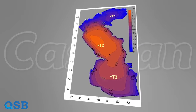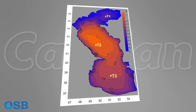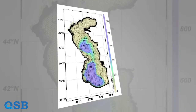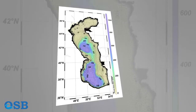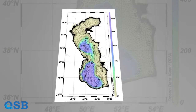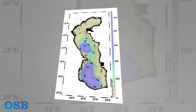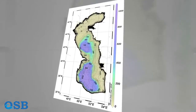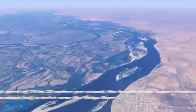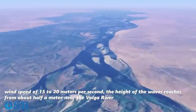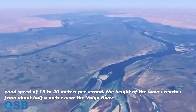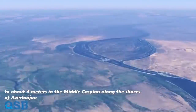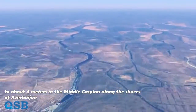Particularly in the northern segment of the middle basin, the waves reach up to 1.8 meter. In general, the Caspian waves increase from the northern basin to the middle basin due to the shallow depth of the Caspian Sea in the northern part. This shallow depth does not allow the waves to develop. For example, on days with a wind speed of 15 to 20 meters per second, the height of the waves reaches from about half a meter near the Volga River to about 4 meters in the middle Caspian along the shores of Azerbaijan.